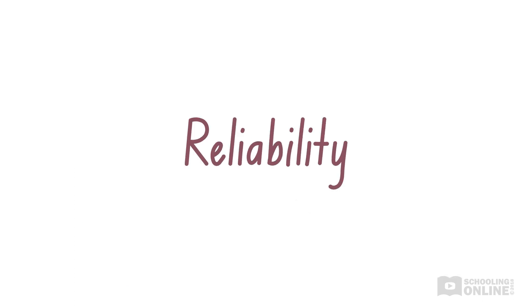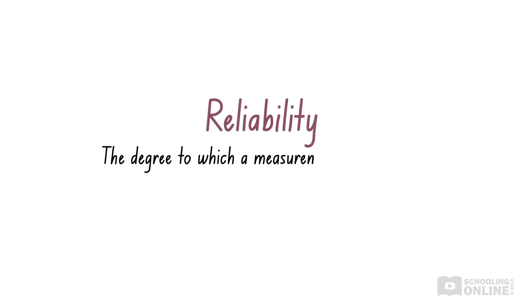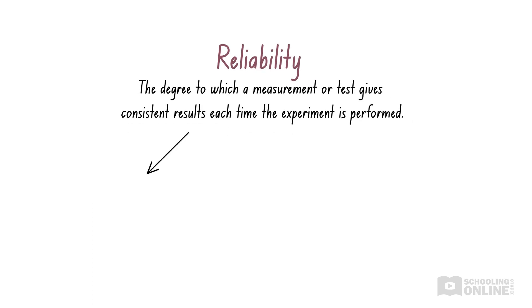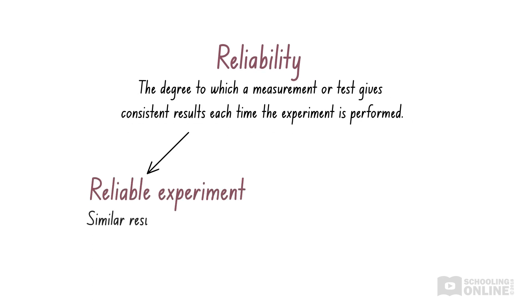Like accuracy, reliability is an important aspect of science experiments. Reliability is the degree to which a measurement or test gives consistent results each time the experiment is performed. This means a reliable experiment produces similar results each time the experiment is repeated.